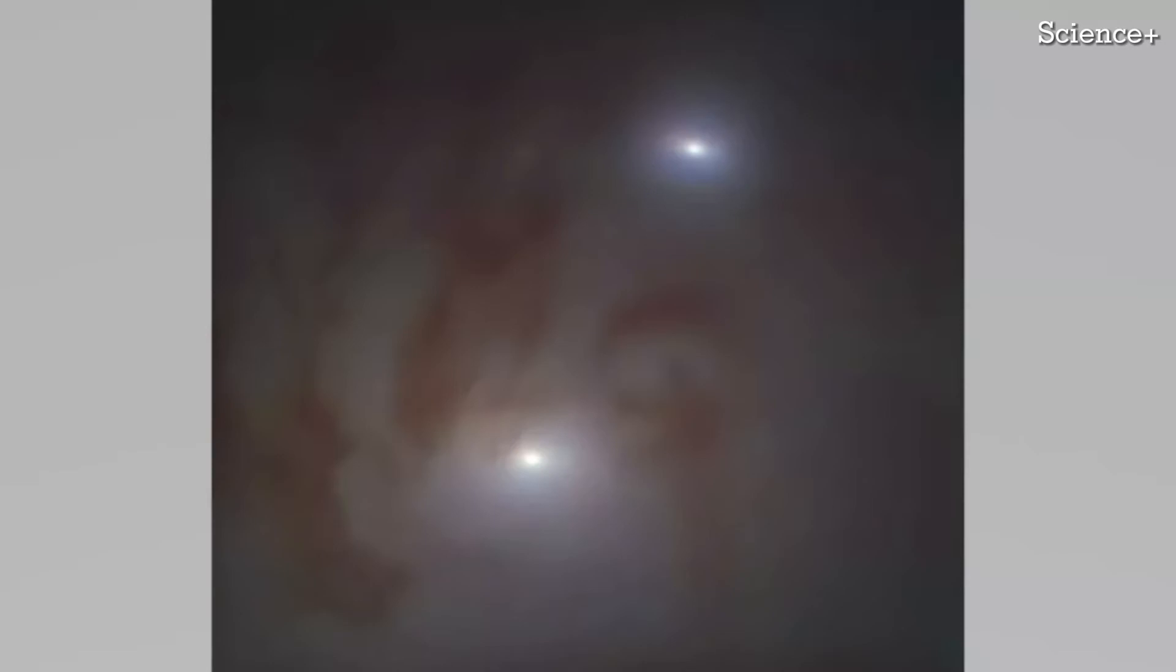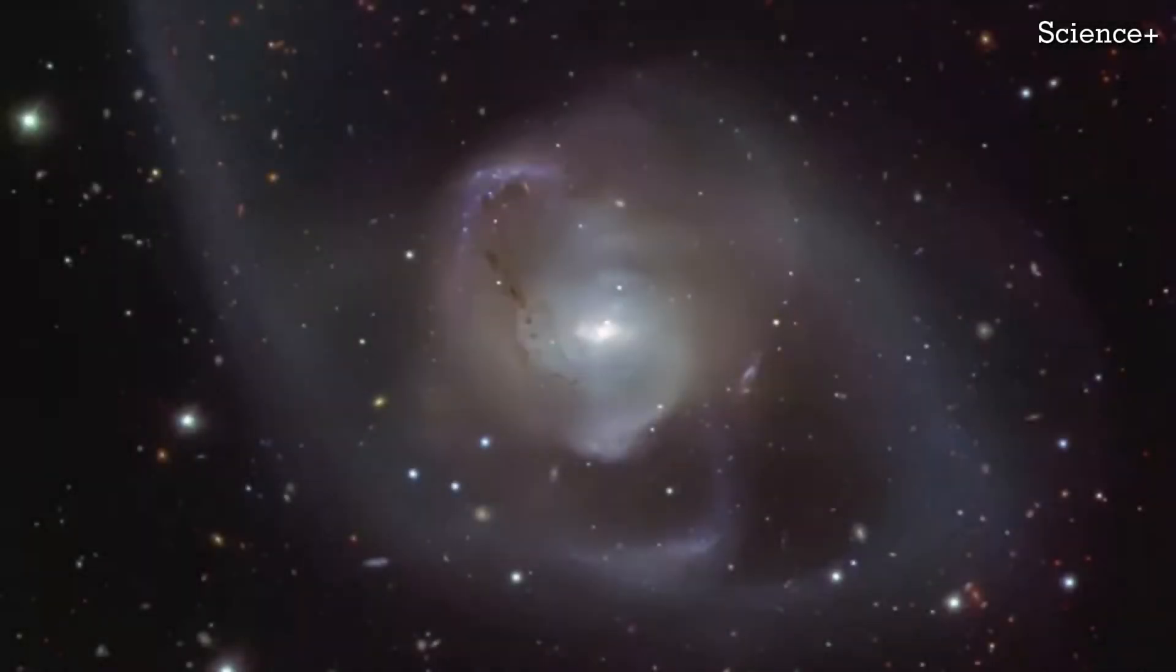According to a statement from the European Southern Observatory, which operates the telescope used in the research, the galaxy created by this billion-year-long collision, called NGC 7727, is a tremendous and beautiful example of the long drawn-out process that two galaxies undergo when they bump into each other.